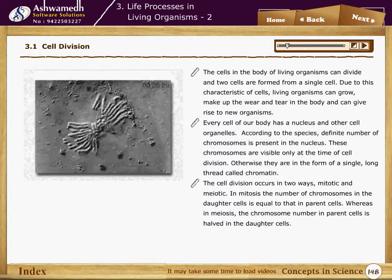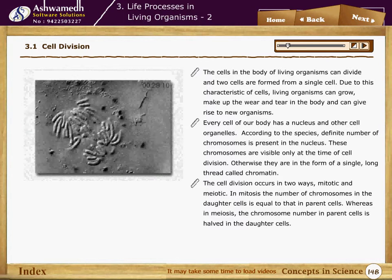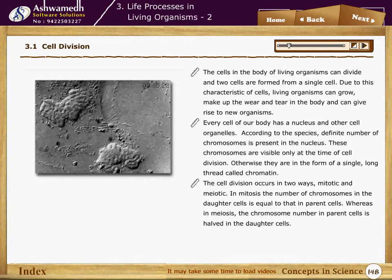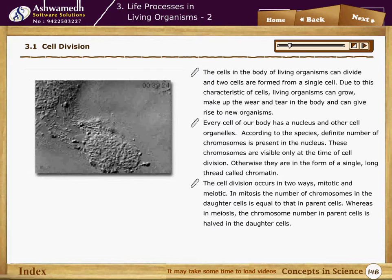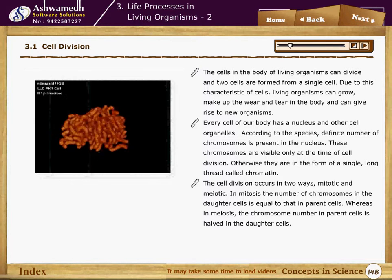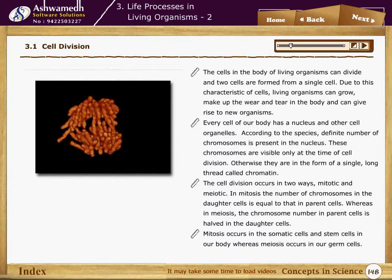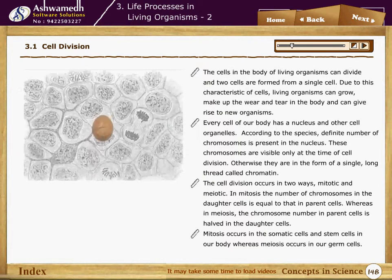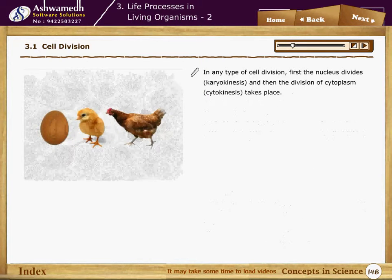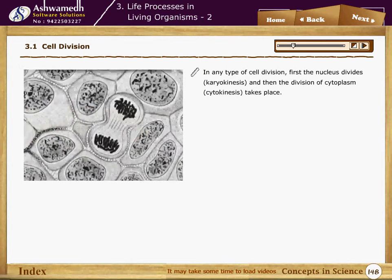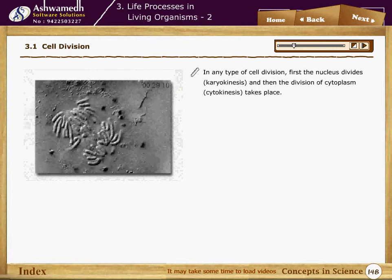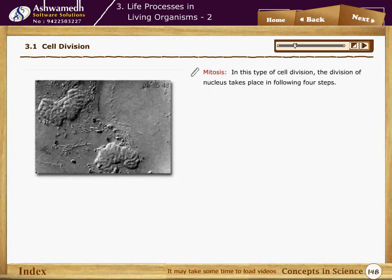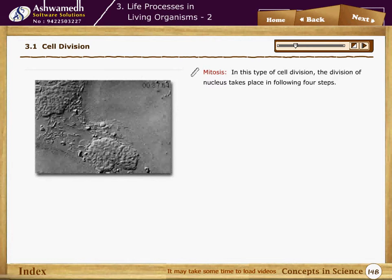Otherwise, chromosomes are in the form of a single long thread called chromatin. Cell division occurs in two ways: mitotic and meiotic. In mitosis, the number of chromosomes in the daughter cells is equal to that in the parent cells, whereas in meiosis the chromosome number is halved in the daughter cells. Mitosis occurs in somatic cells and stem cells, whereas meiosis occurs in germ cells. In any type of cell division, first the nucleus divides (karyokinesis), then the cytoplasm divides (cytokinesis).